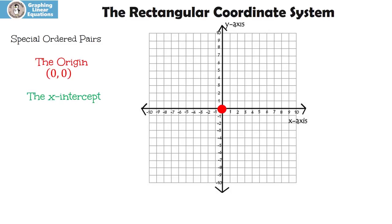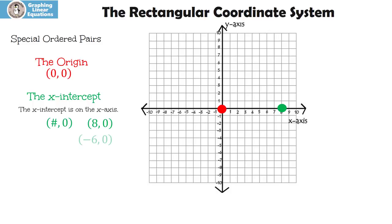We also have something called the x-intercept. The x-intercept is on the x-axis. The x-intercept always has a number for the x and zero for the y. Let me show you an example: eight, zero is an x-intercept, because eight is on the x and it goes zero on the y — it goes nowhere. The x-intercept is always on the x-axis. Let's look at negative six, zero.